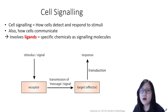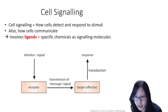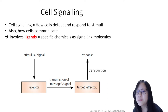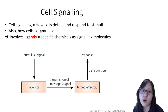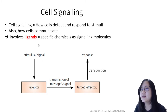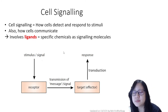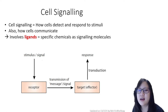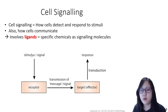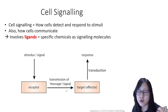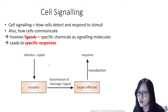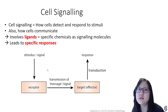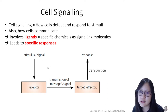Cell signaling doesn't involve talking for cells. They use specific chemicals as signaling molecules called ligands. Ligands act as signaling molecules, and they bind to the receptor on the target cell, transmitting and transducing the message, resulting in specific — not just any — responses from the cell.